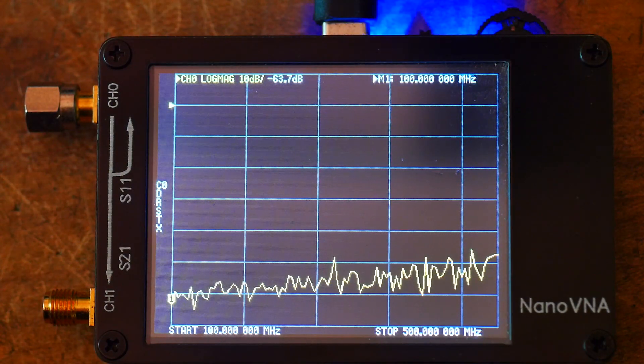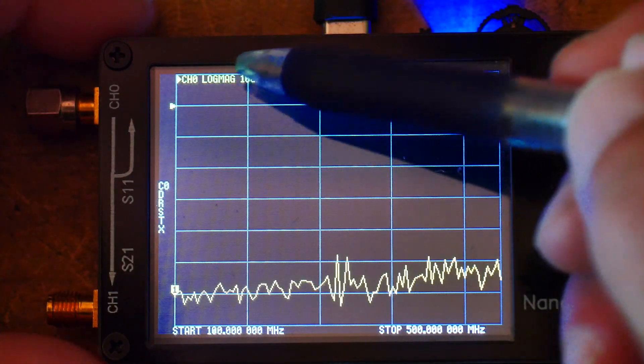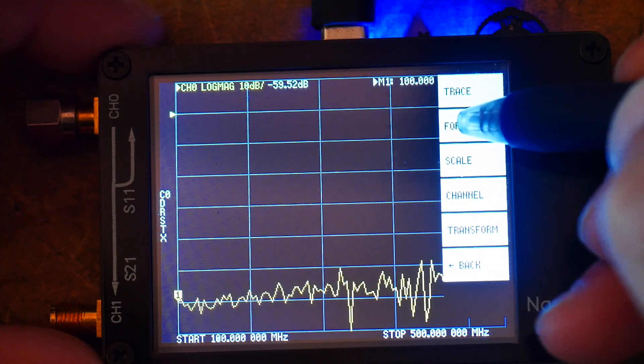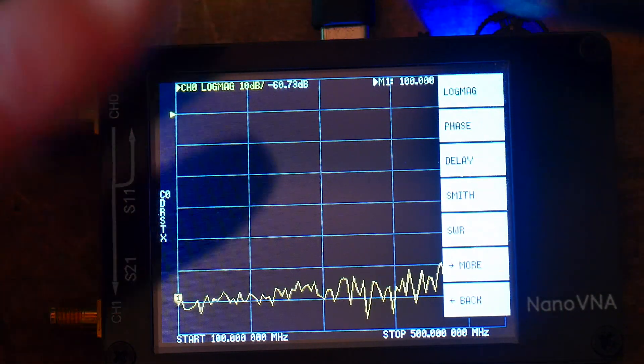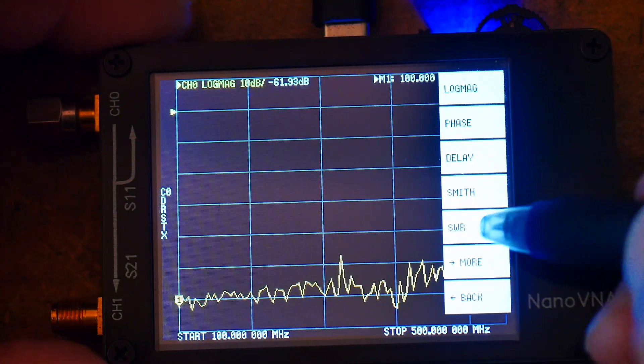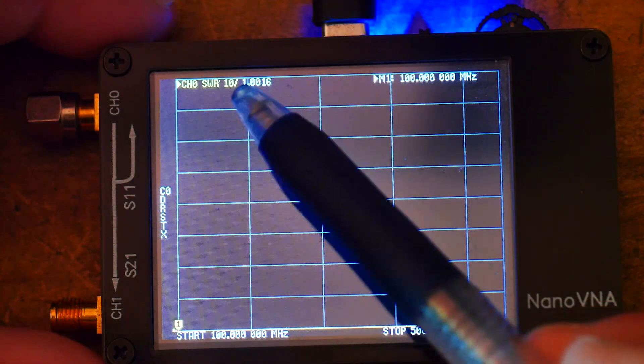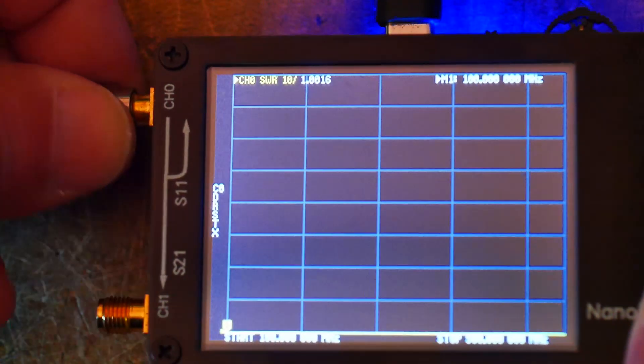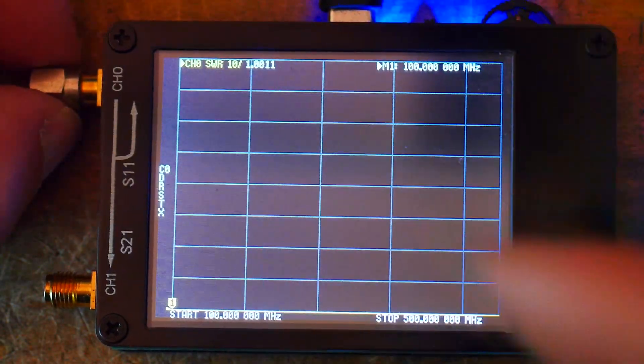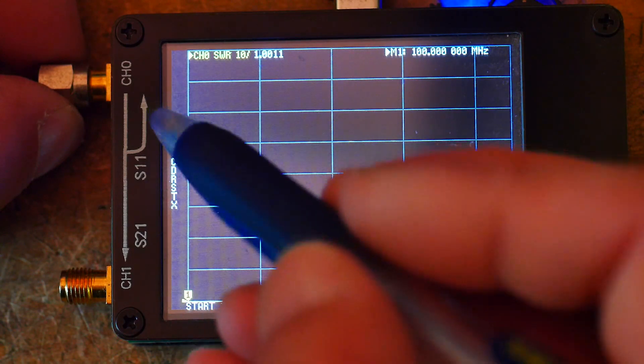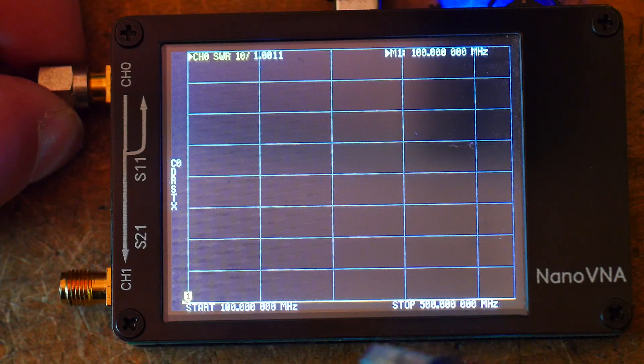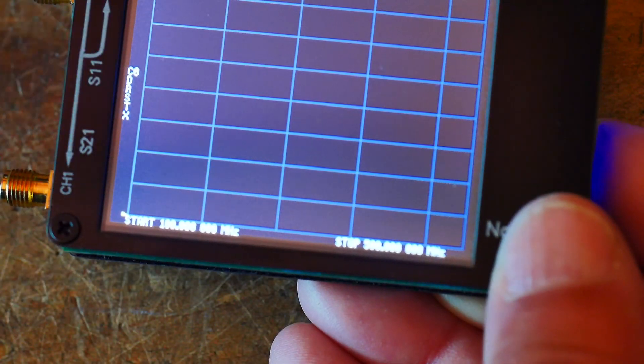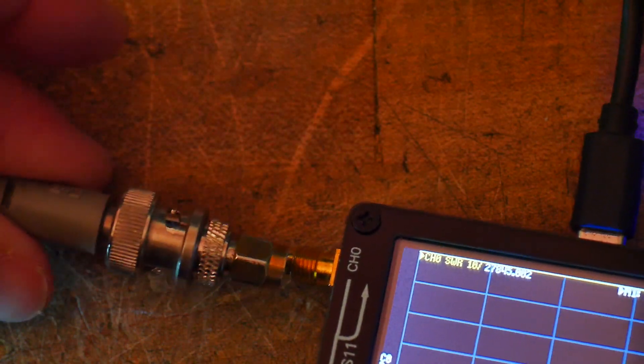Now that we're calibrated, we want to measure SWR and we are not right now. We are measuring log mag, whatever that is. So let's go here to display format. And here's all of our choices. We can have it do a bunch of things. The only one that we care about is SWR. It's down here. So let's click on SWR. So now up here at the top left, it says channel zero SWR. So that's what we want. So let's disconnect our little load. So because it's 50 ohm load and we just calibrated it, the SWR is perfect everywhere. It's right down here at the bottom.